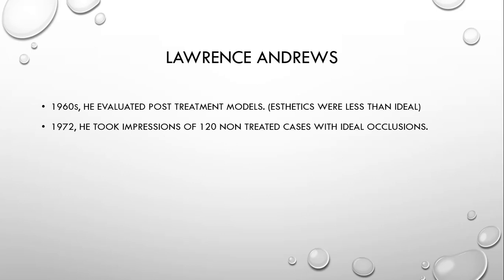He reached the conclusion that aesthetically his cases were less than ideal and not up to the mark, despite a proper Class I molar relationship. The aesthetics still had some problems. Initially he was very confused, thinking about what was wrong with his treatment. But later on he decided to do research on people having ideal or near-ideal occlusion. For that, in 1972, he recruited 120 non-treated cases who had ideal occlusions.